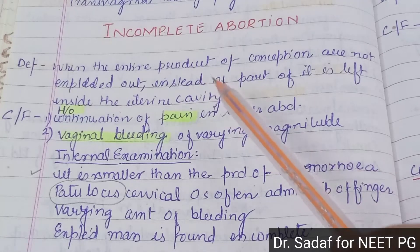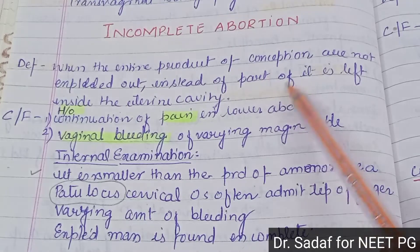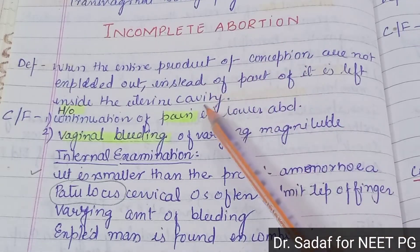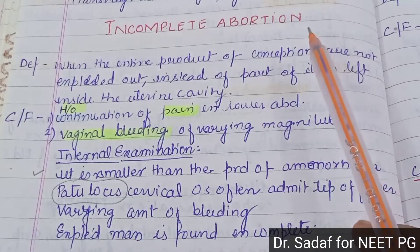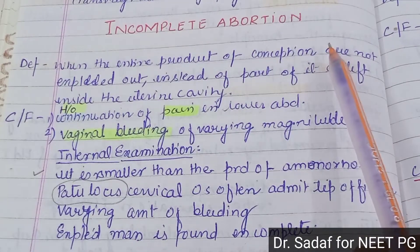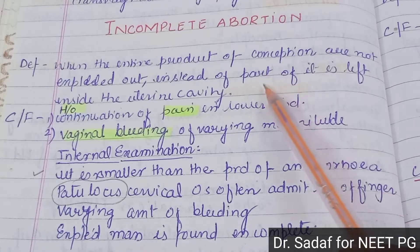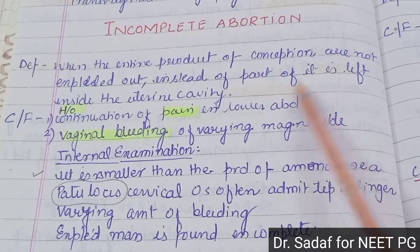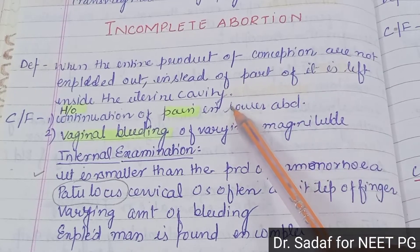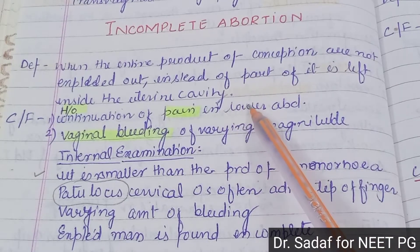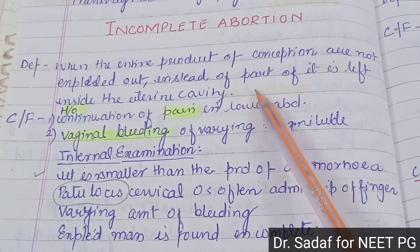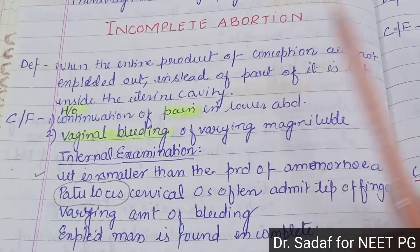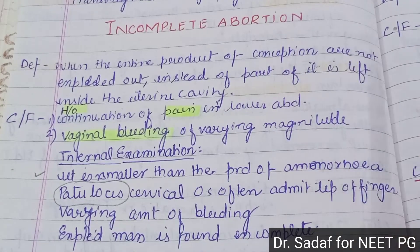Incomplete abortion is when the entire product of conception is not expelled out. Instead, a part of it is left inside the uterine cavity. Some parts are out and some parts remain in the uterus. This is called incomplete abortion.